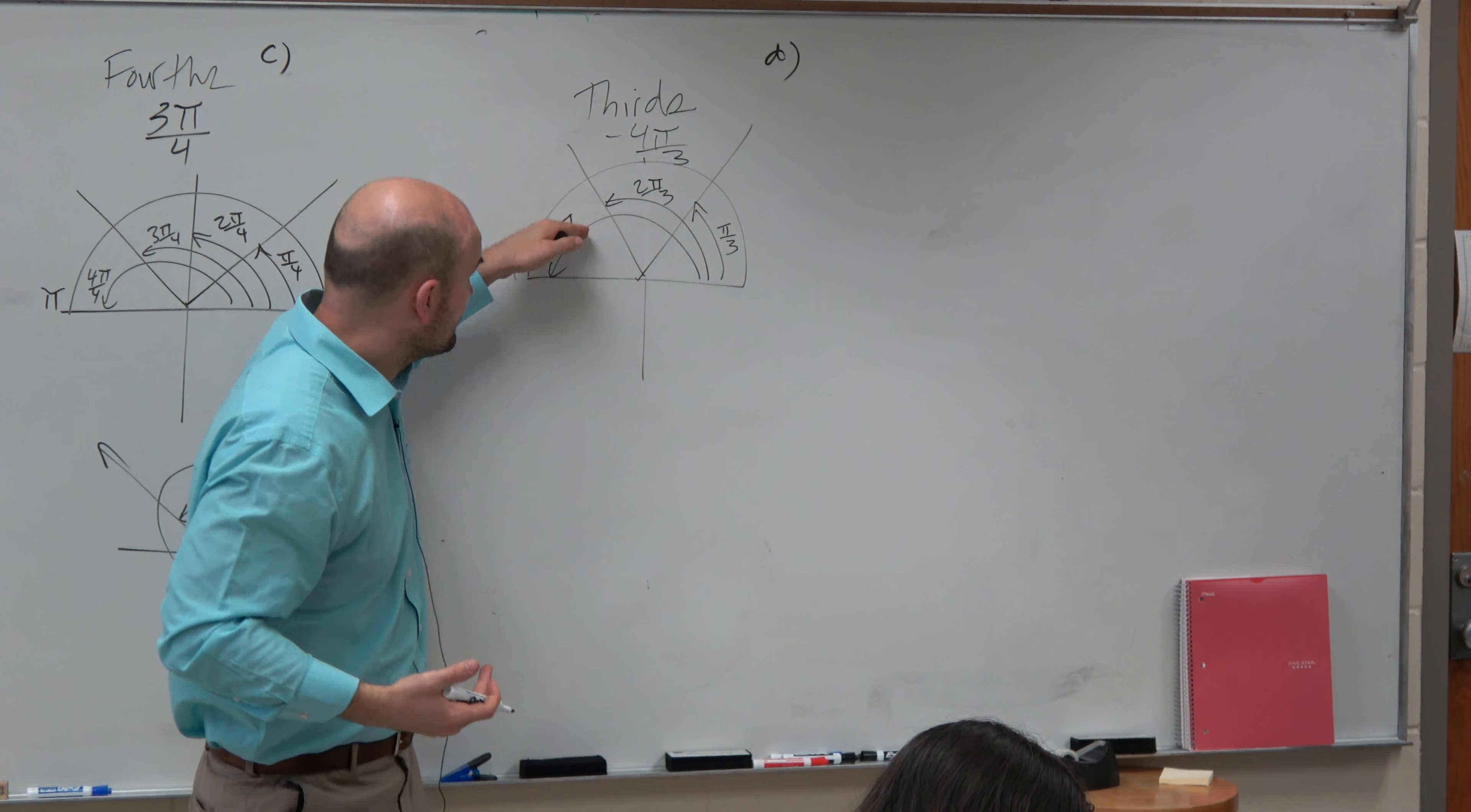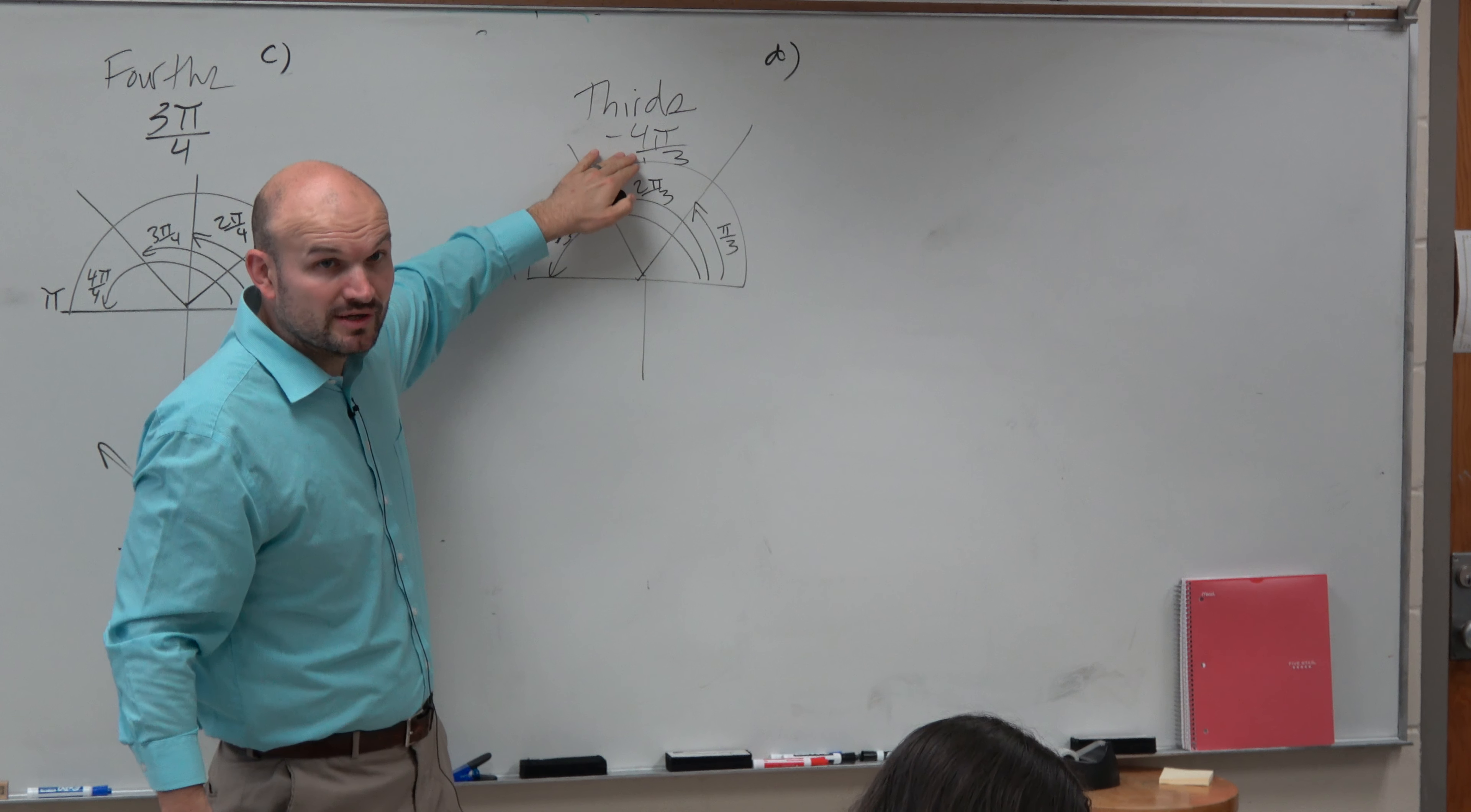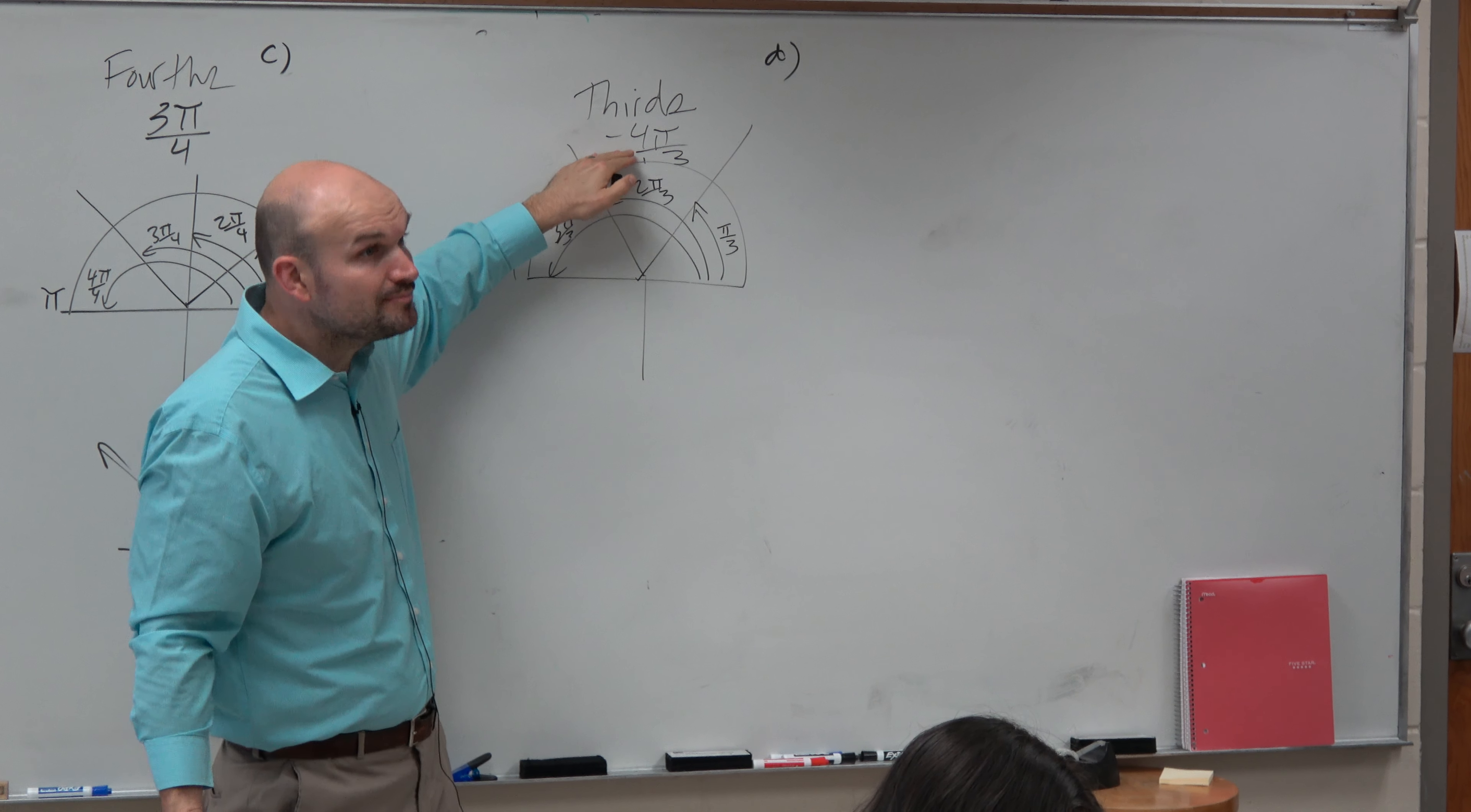So again, if we're at 3π over 3, now notice what this fraction is, 4π over 3. That means I just need to go an extra π over 3 over, right?